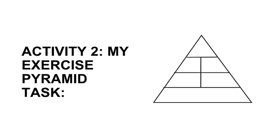Activity 2: My Exercise Pyramid. Task: Fill the pyramid with exercises you should do to improve your physical fitness level. Be sure to follow the correct shape of the pyramid — the tip means less activity and the base means more activity.